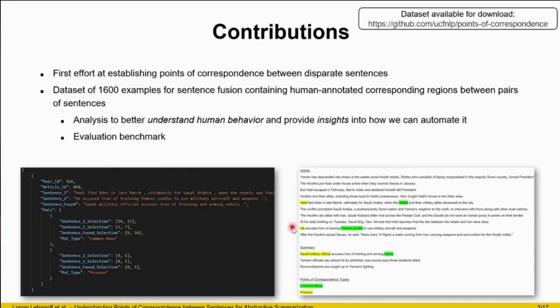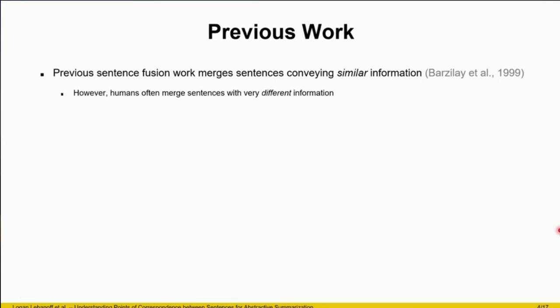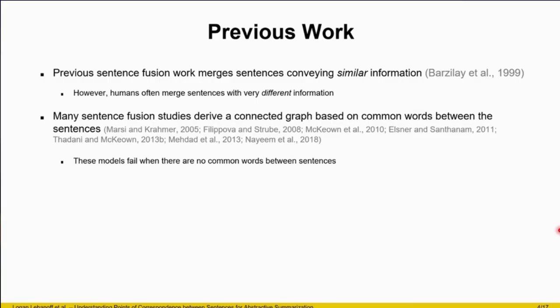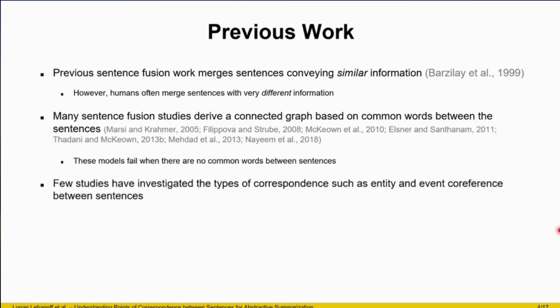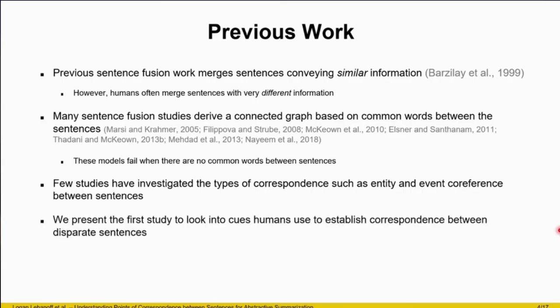Let's look at some of the previous work. Previous sentence fusion work often merges sentences conveying similar information. The problem is that humans don't just merge sentences with similar information — they also merge sentences with very different information. Also, many studies derive a connected graph based on common words between sentences; however, they fail when there are no common words. Few studies have investigated the types of correspondence, such as entity and event co-reference between sentences. We present the first study to look into the cues that humans use to establish correspondence between disparate sentences.